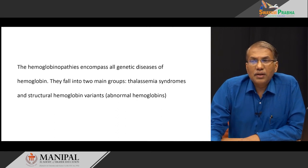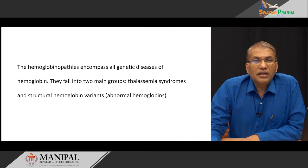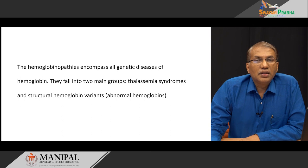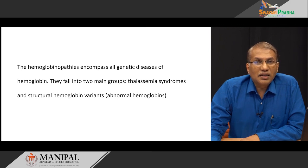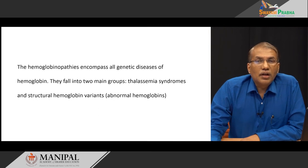Hemoglobinopathies encompasses all genetic diseases of hemoglobin. They can be categorized into two main groups: thalassemia syndromes, wherein there is a problem in globin chain synthesis, and hemoglobin variants or abnormal hemoglobin, wherein even though all the chains are intact, there is some mutation in the chain amino acids that leads to abnormal functioning of these hemoglobins.